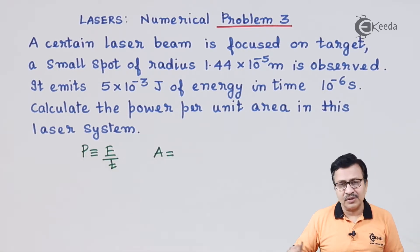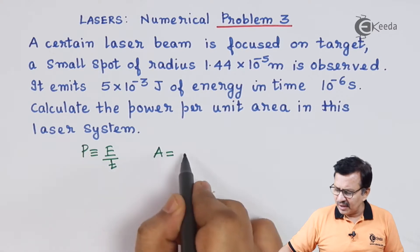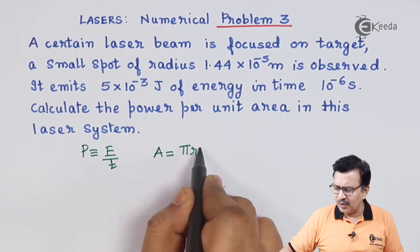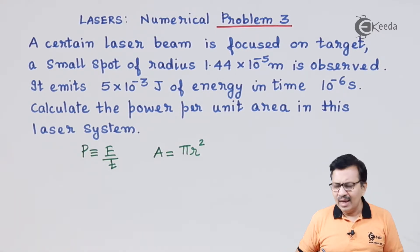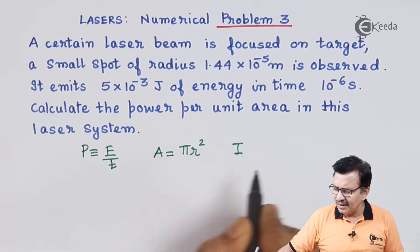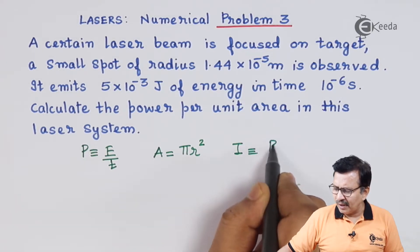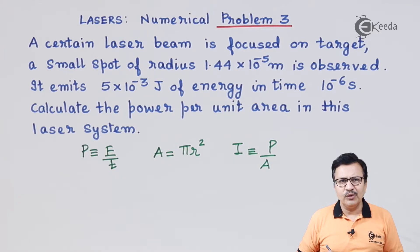Since it is a circular spot, the expression for the area will be equal to πr². And finally, the intensity is equal to the power divided by the area. So we do it step by step.